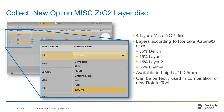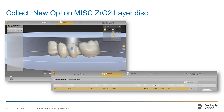We have also added a layered zirconium oxide disk which is based on the layering of the Noritake Katana disk. You will not find Noritake as a material brand in the software yet, but if a user wants to use this disk they can use the Zirconium Oxide Multi-Layer from the Miscellaneous selection, and the layering is based on the Katana layering. As you can see in the next slide, it will show all the different shades of the layers in the puck and the user can position the restoration according to their needs.